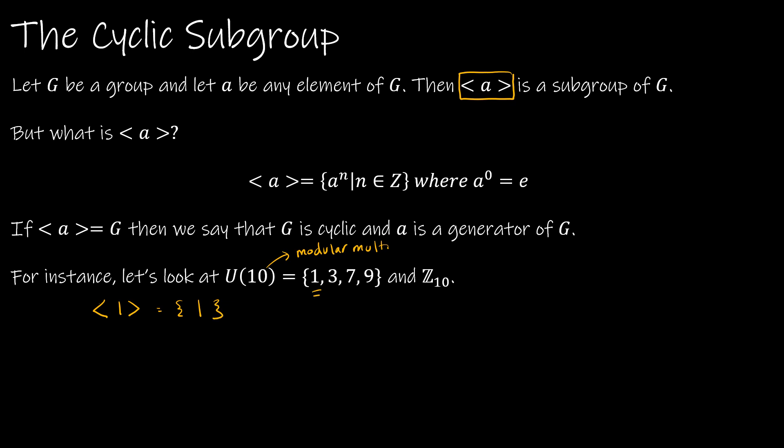Now, what's going to happen when I take 1 to the zero and 1 to the first and 1 to the second? Well, the only thing I'm going to get is 1, which is the identity. So while <1>, the subgroup generated by 1, is in fact a subgroup, it doesn't generate every member of the group. So if the element generates every element of the group, we say that the group itself is cyclic and has a generator of a.